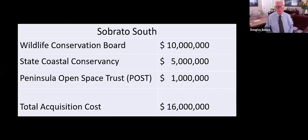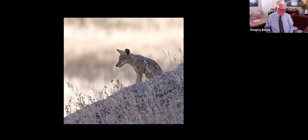This approximately 235-acre property is currently used to farm hay and graze cattle. It has significant habitat value with approximately 22 acres of wetland habitats, providing suitable habitat for California red-legged frog, California tiger salamander, tricolored blackbird, and burrowing owl. Bobcats have been detected moving through the Fisher Creek corridor on this property. Sobrado South is immediately adjacent to a proposed alignment of the Bay Area Ridge Trail, and the property provides natural floodplains that will help protect the watershed's ability to reduce and delay peak flows, providing downstream flood protection to the City of San Jose. The $16 million acquisition will be funded with $10 million from the Wildlife Conservation Board, $1 million from POST, and $5 million from the Coastal Conservancy.